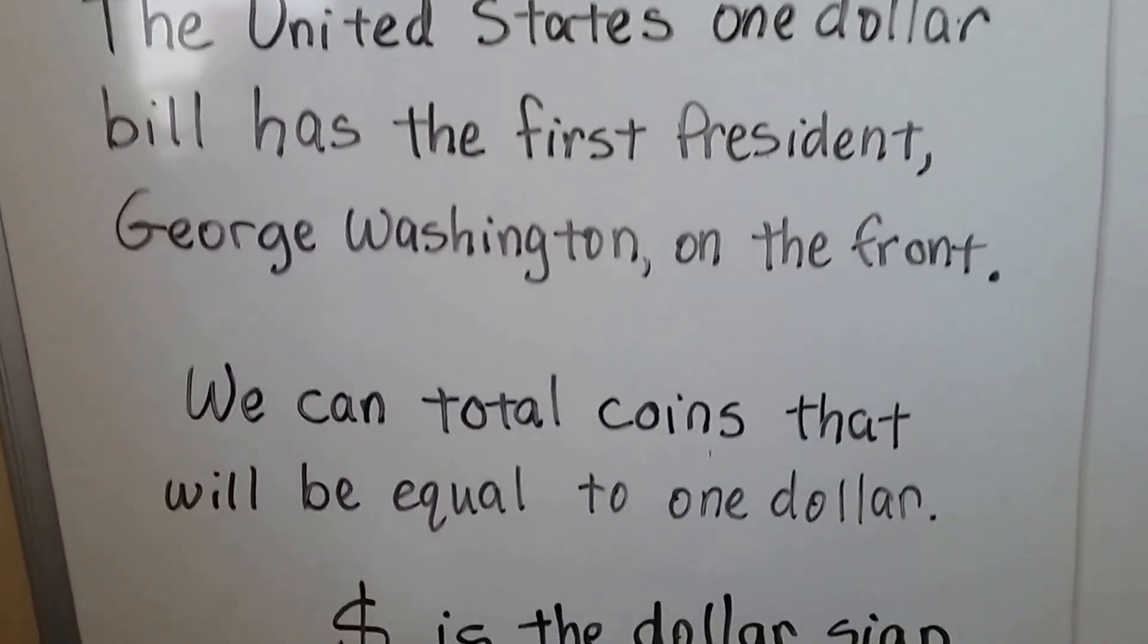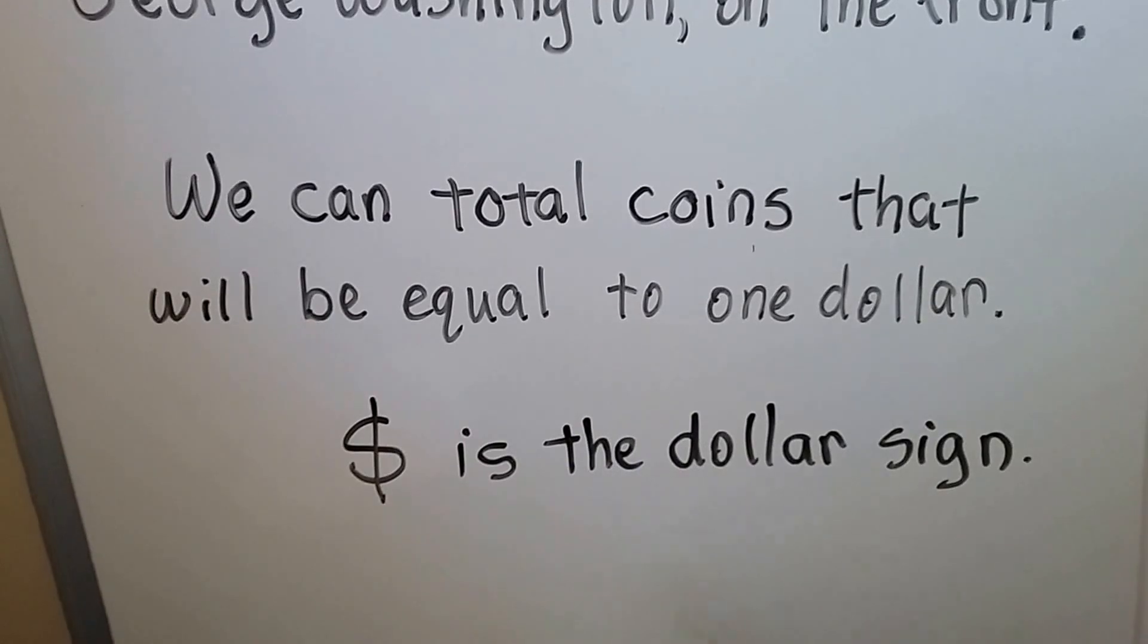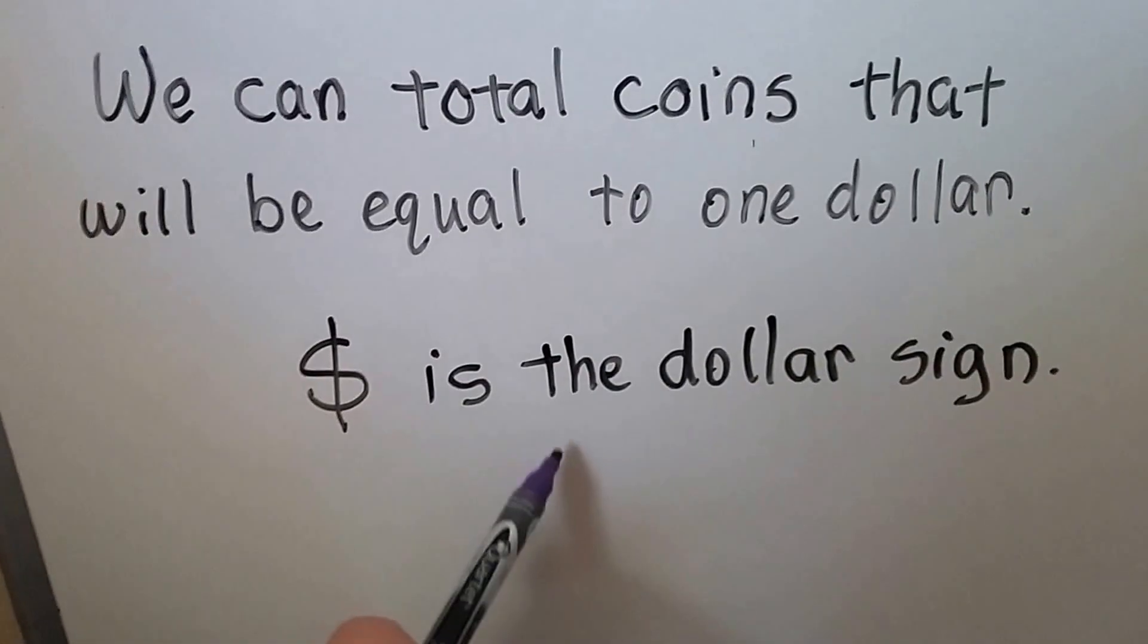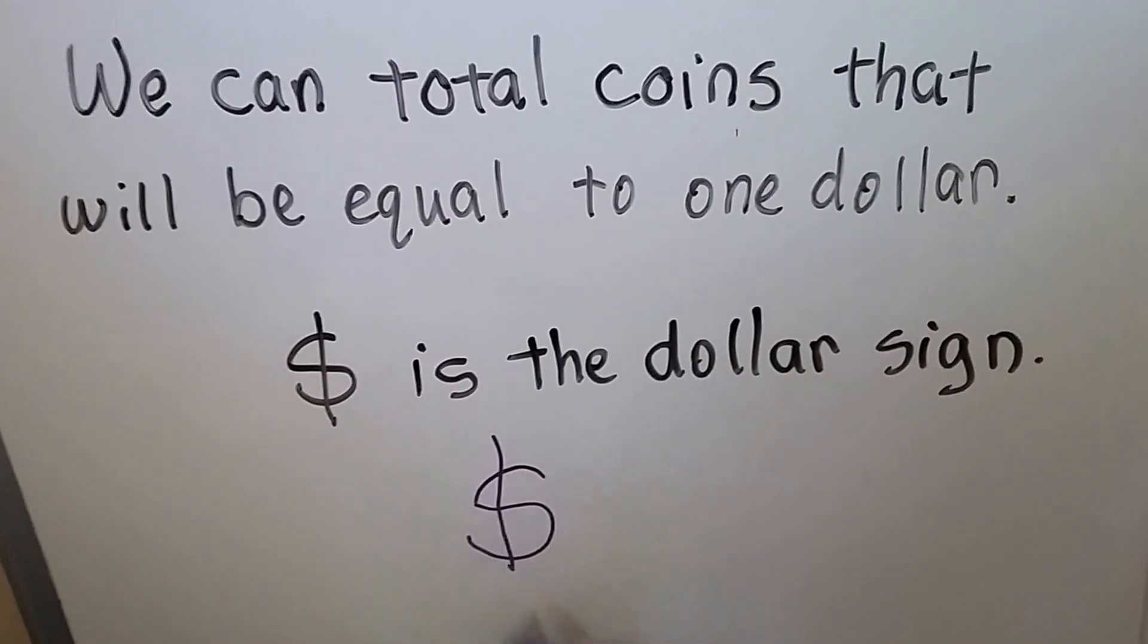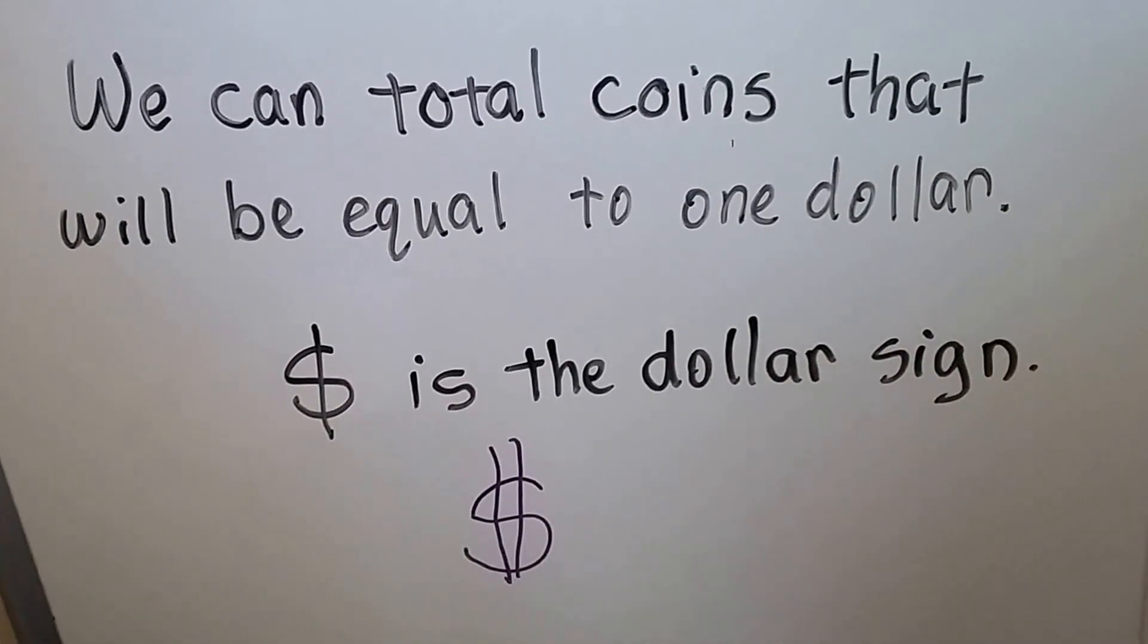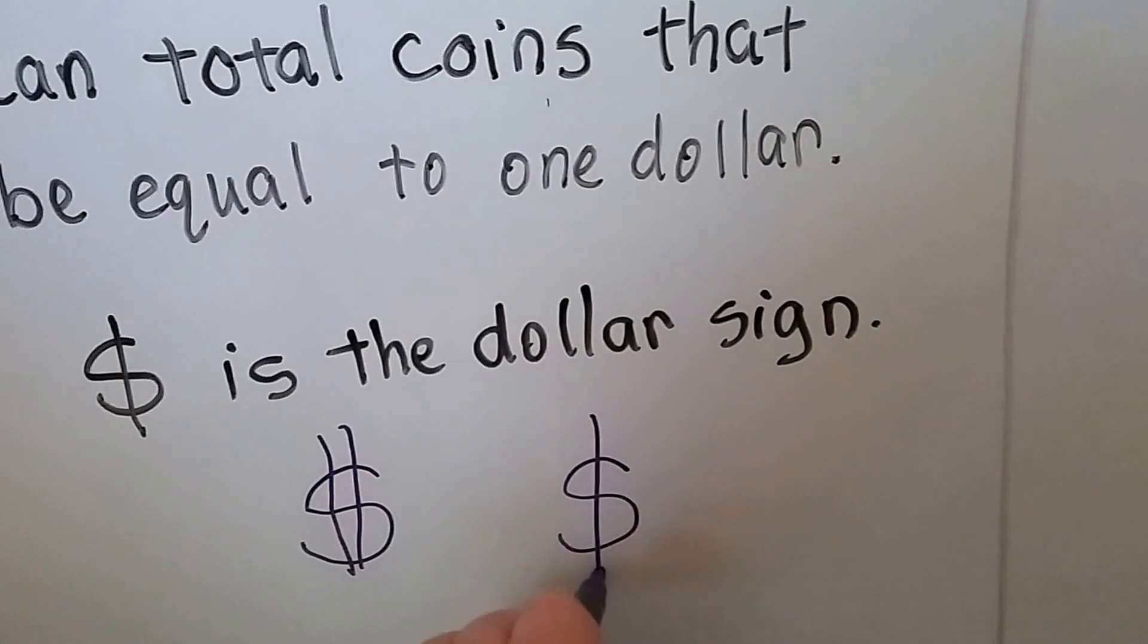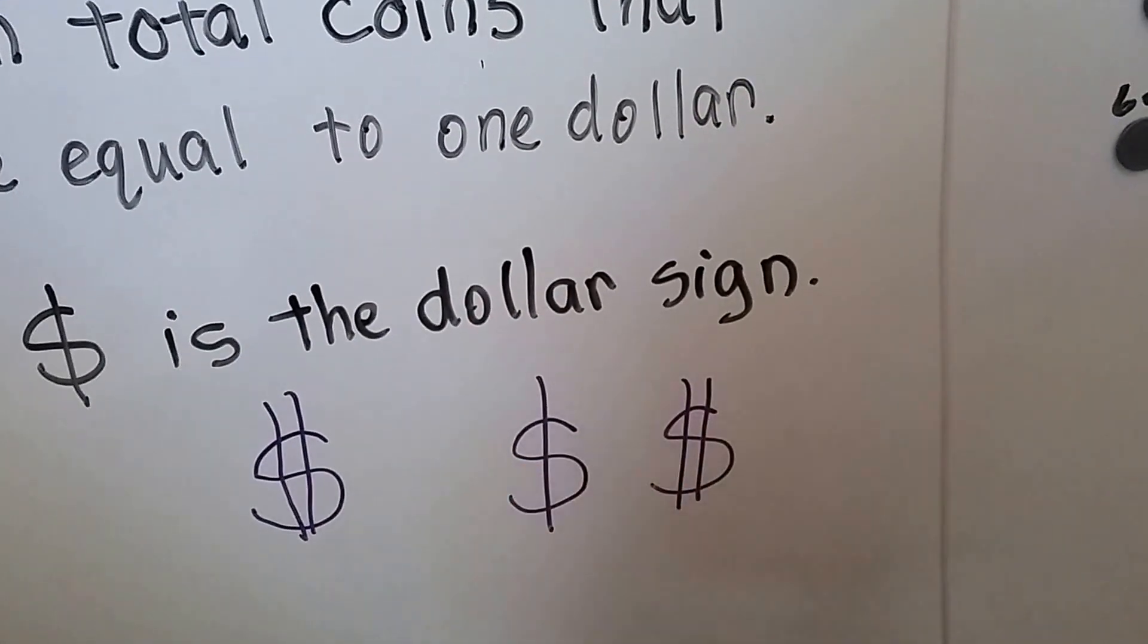We can total coins that will be equal to one dollar. This is the dollar sign. We make an S, we draw a line through it. Sometimes you'll see two lines through it. It doesn't matter which way you do it. You can do it with one line, which I think is easier, or two lines, that's all right too.